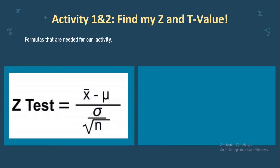The first formula is for finding the Z value. The X-bar here stands for the sample mean, while the letter U is called mu, which stands for the population mean. While in the denominator, the letter sigma (with a symbol on top) stands for the population standard deviation. And the letter N stands for sample size. Overall, Z value is equal to sample mean minus population mean, over population standard deviation divided by the square root of the sample size.